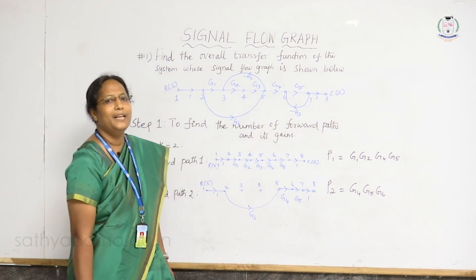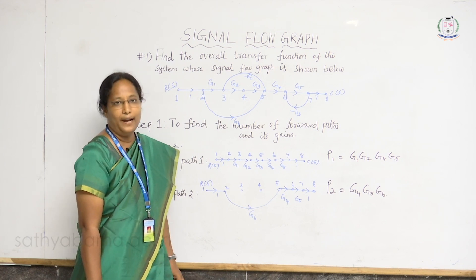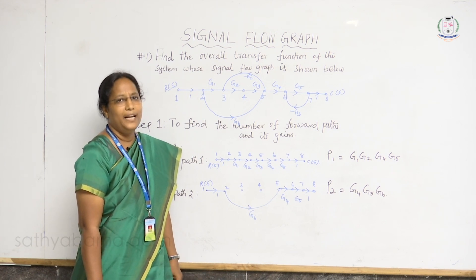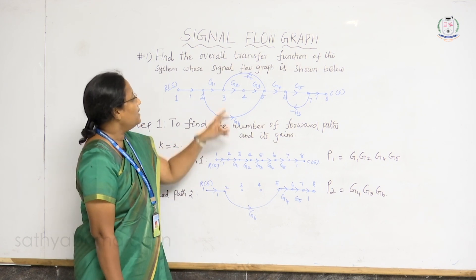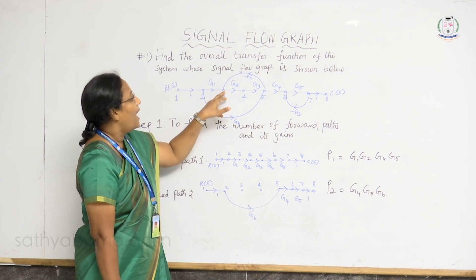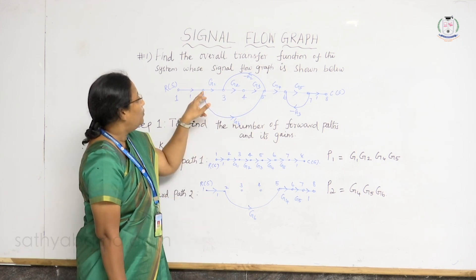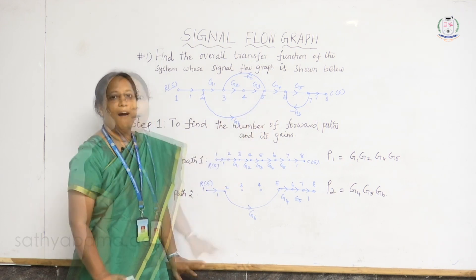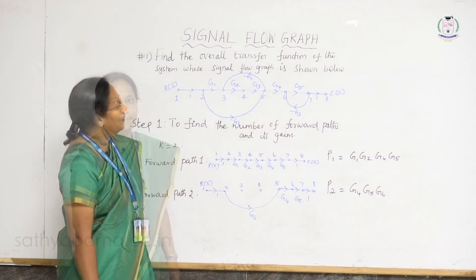And the mixed node. Mixed node is nothing but a node which has both incoming and outgoing branches. Consider node 3 — it has incoming branches as well as outgoing branches, so nodes 2, 3, 4, 5, 6, and 7 are all called mixed nodes.